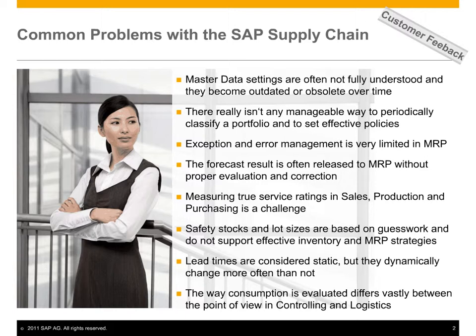There is the MRP monitor that allows for segmentation and automated policy update for many materials at a time. And there is the inventory cockpit that allows for analysis and optimization of your inventories all in one transaction, as opposed to the LIS where you have to go to many different transactions and pull data together, often copying it into an Excel spreadsheet. The inventory cockpit offers a one-stop shop for inventory analysis with many KPIs that are not available in standard SAP.